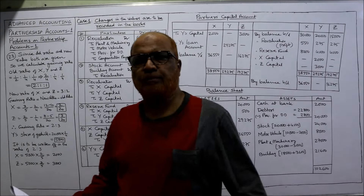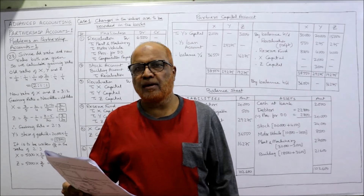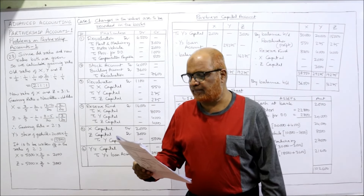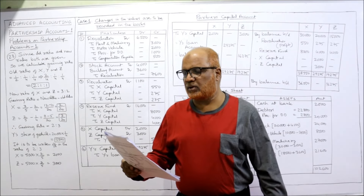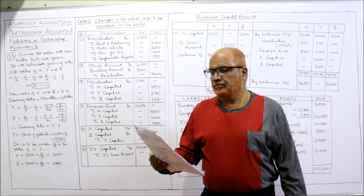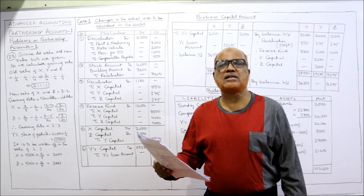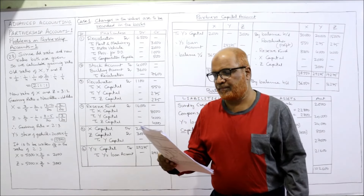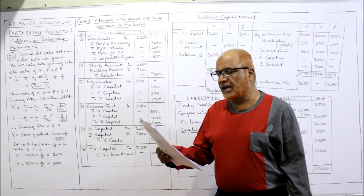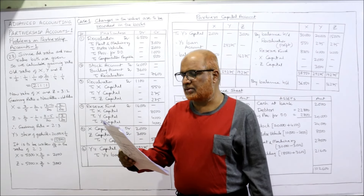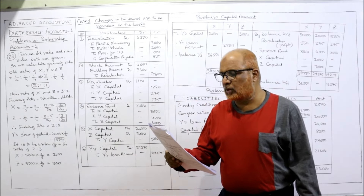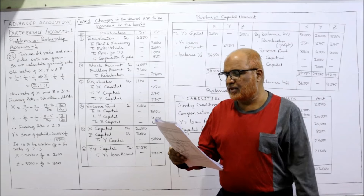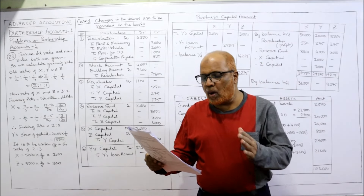Problem number 23: X, Y, and Z were partners sharing profits in the ratio of 1/2, 1/4, and 1/4 respectively. The balance sheet of the firm on 31st December 2005 was given: sundry creditors 20,000; reserve fund 16,000 — remember, reserve fund should be distributed among all the partners at the time of retirement. Capital accounts: X = 30,000, Y = 20,000, Z = 15,000. Assets: cash at bank 2,000; debtors 22,800 less provision 1,800; stock; motor vehicle; plant and machinery; and building.